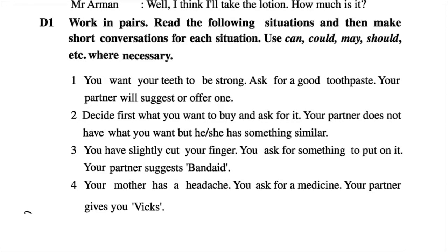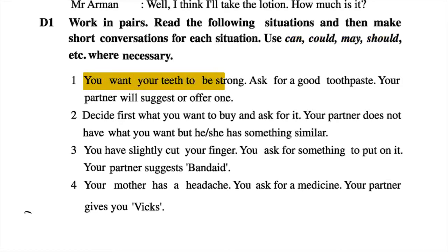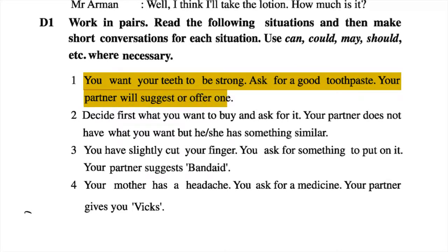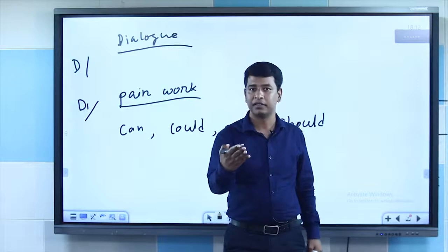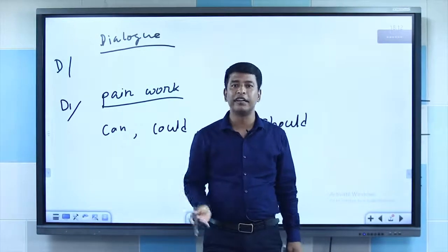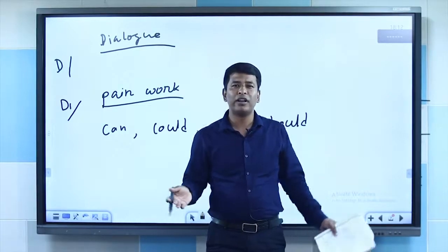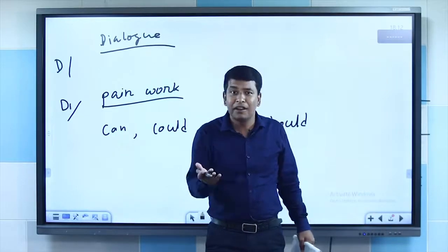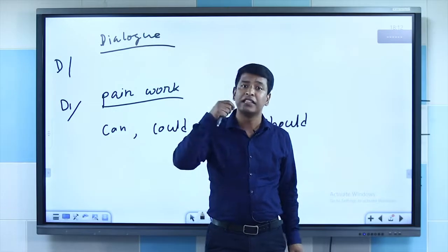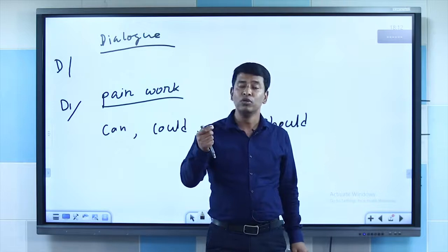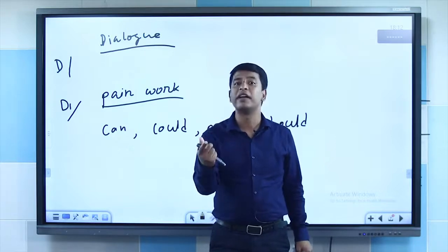In section D it's peer work. You have to use the words: can, could, may, should. In your book there are examples — you want your teeth to be strong, ask for a good toothpaste, and your partner will suggest one. For example: 'Good morning. How are you?' 'I'm not so well, I have toothache. Can you help me?' 'Yes, you may take some clove in your teeth — this will soothe your pain.'